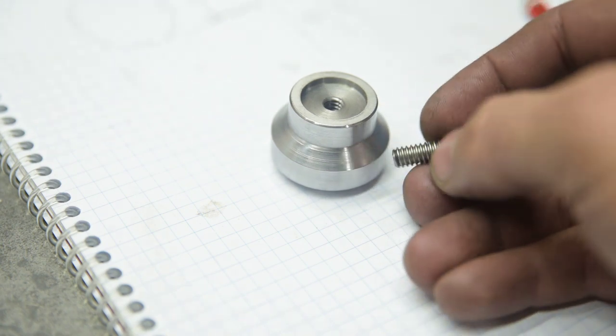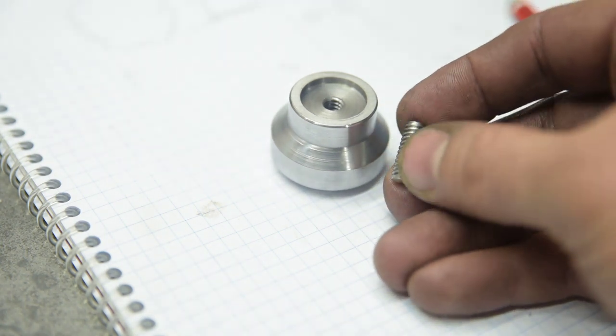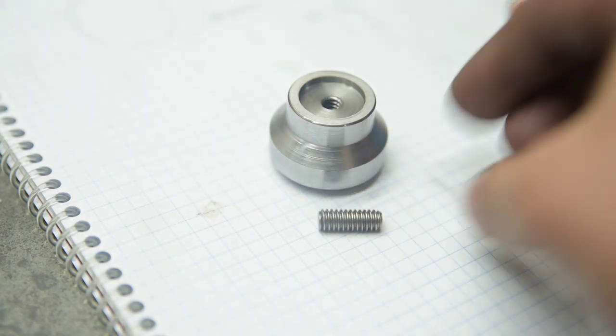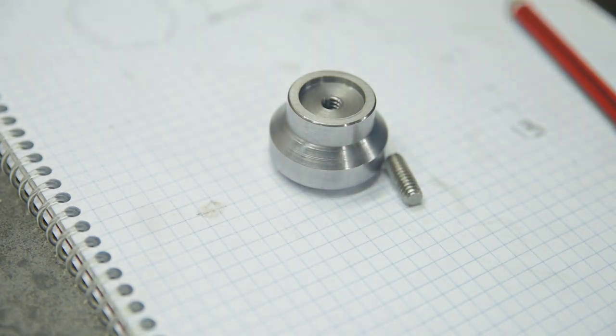So our next step is to glue this stud in. I cut this off. This turns out that it's stainless, but that's not going to hurt. I'll glue that in and we'll take it over to the mill and do the flutes next.